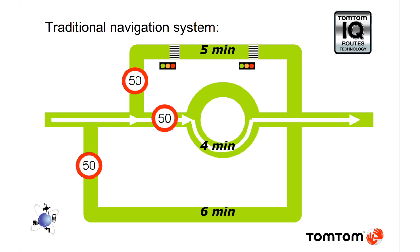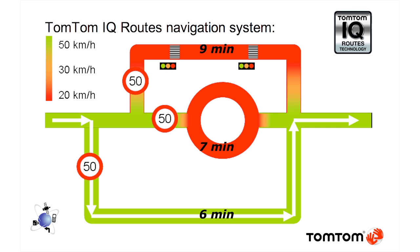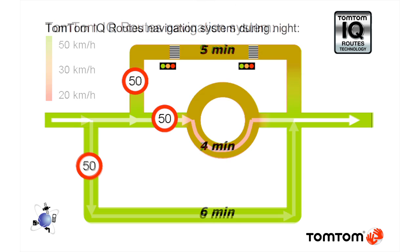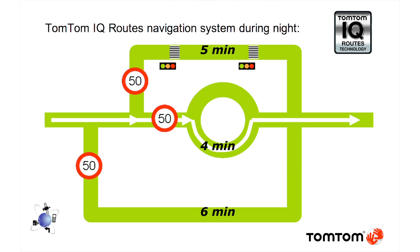Here we see the traditional routing calculation, which is purely time-based, distance and speed limit. With IQ routes, TomTom now knows the real speeds on the road at any time of the day. So that at peak times, the best route is also the longest in this particular example. But at night time, the fastest route is also the shortest distance.